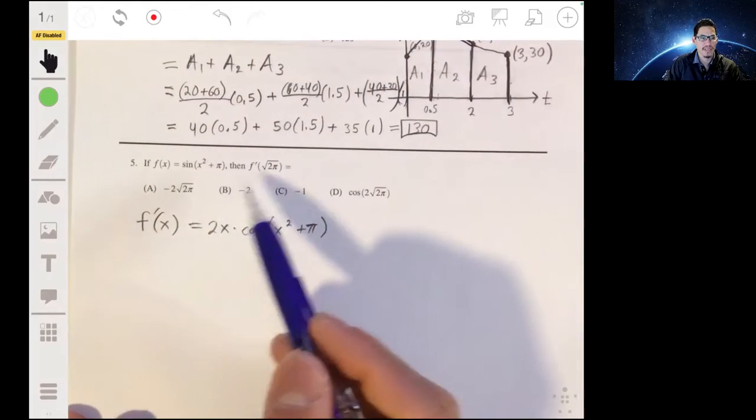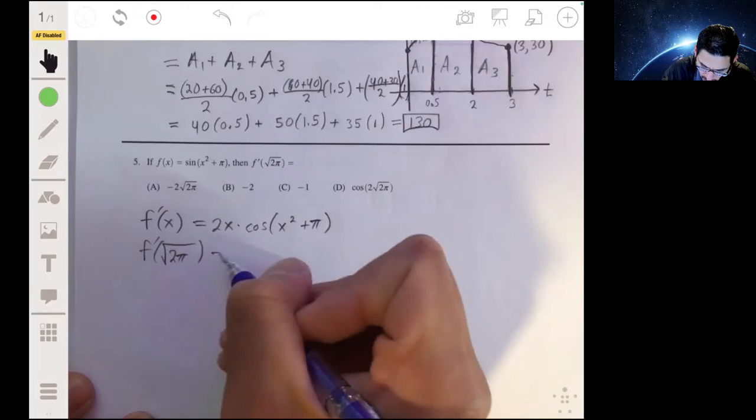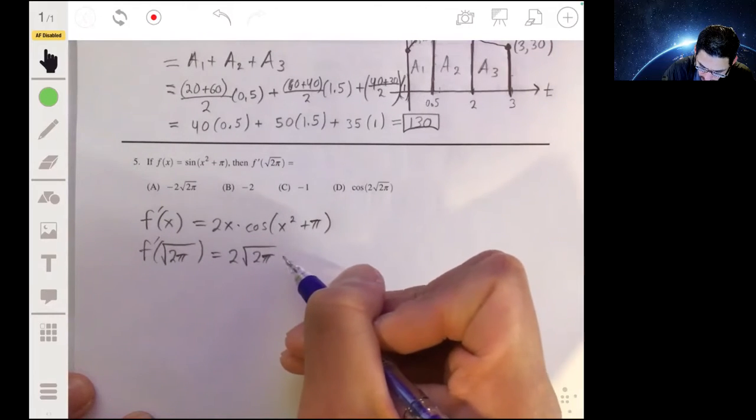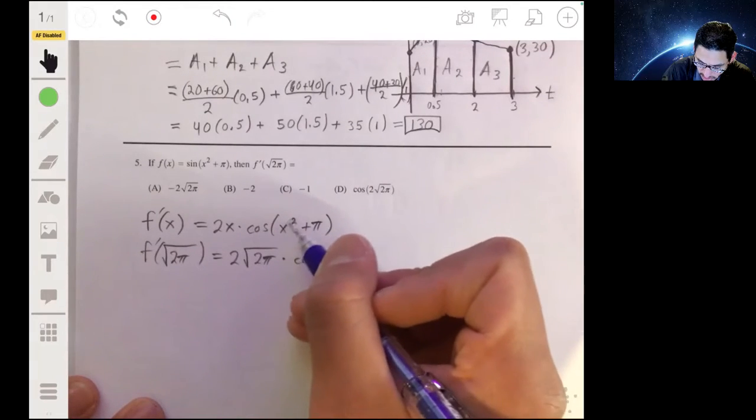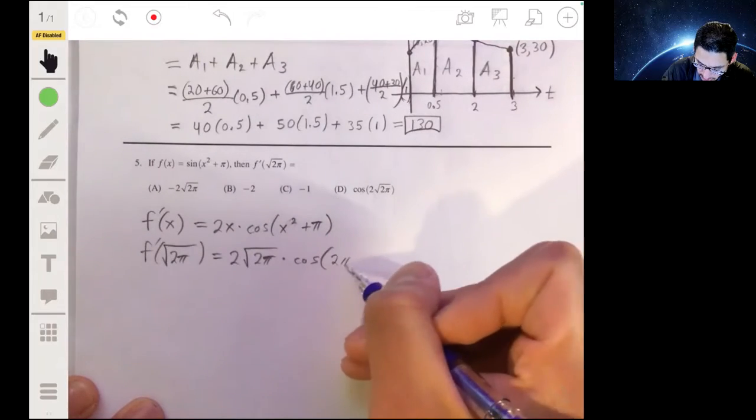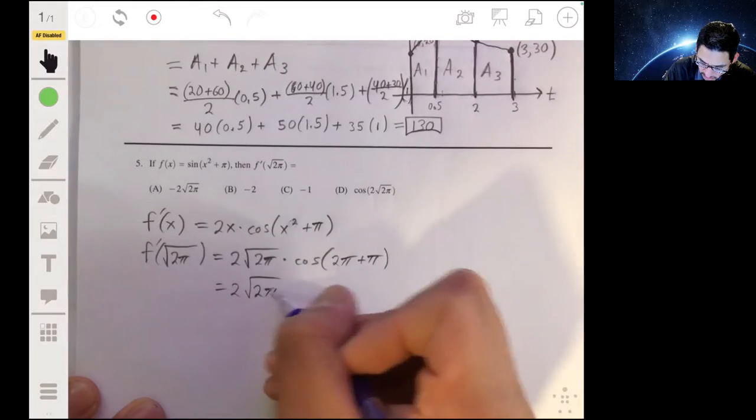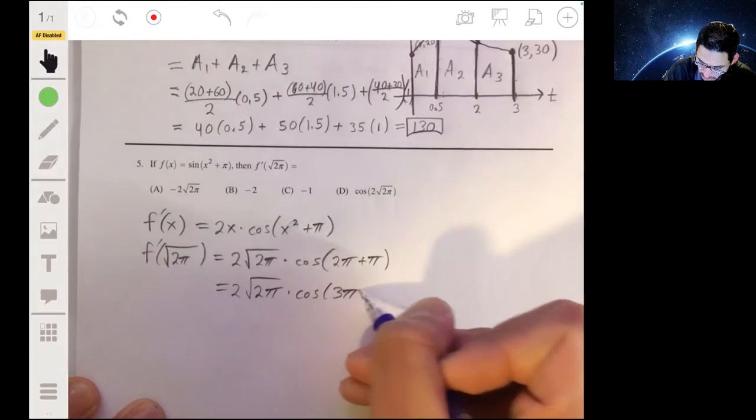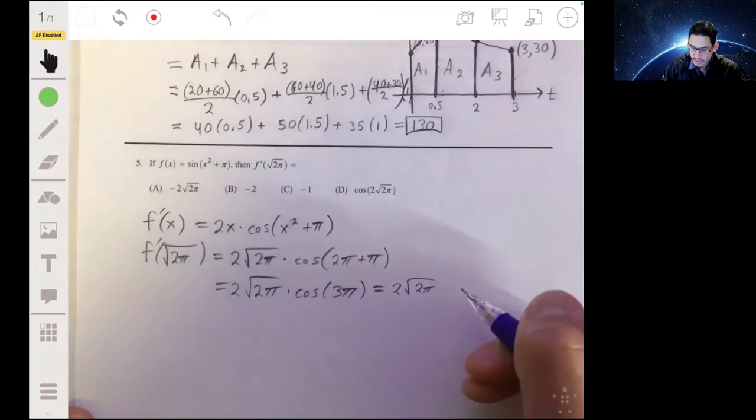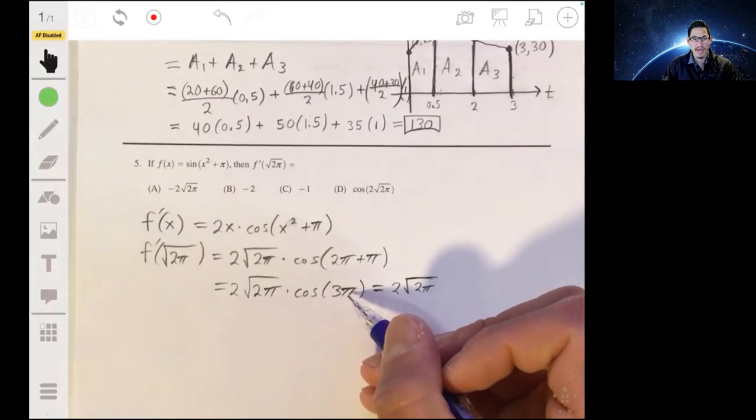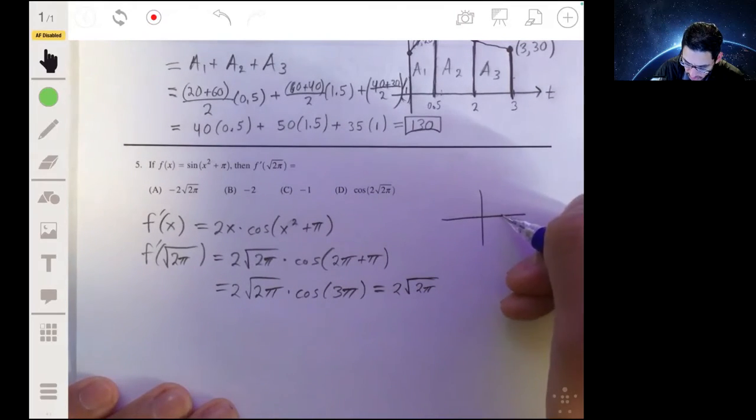Now, all we're essentially doing is evaluating the function when x is the square root of 2 pi. So f prime of the square root of 2 pi will be 2 times the square root of 2 pi, times the cosine of the square root of 2 pi squared. The square root of 2 pi squared, you just get 2 pi plus pi in there. So what you really have is 2 times the square root of 2 pi times the cosine of 3 pi.